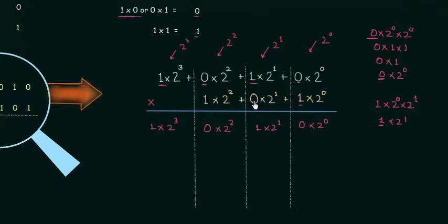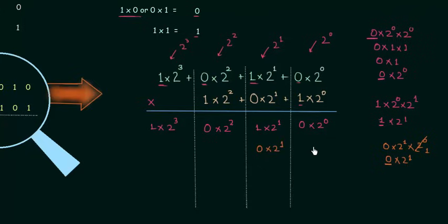Now we move to this 0. I will multiply 1010 by this 0. 0 multiplied by 0 gives 0, and the weight 2 raised to power 1 multiplied by 2 raised to power 0 gives 2 raised to power 1, so this result settles in the second column. I will put a cross mark in the first column for this row because none of the results will have weight 2 raised to power 0. Multiplying 0 by 1 gives 0 with weight 2 raised to power 2.